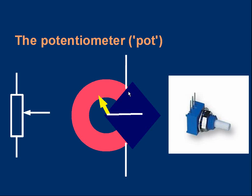You have a contact wire on one end of the track, another on the other end. That's the top and bottom wires on the symbol.